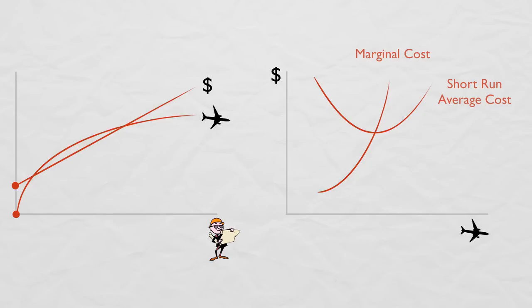Intuitively, if the last unit of production had below average cost, then the average is pulled up.